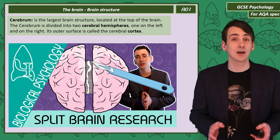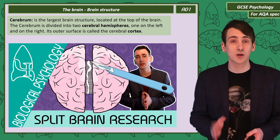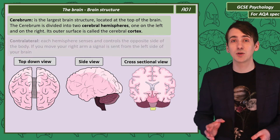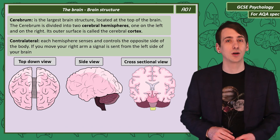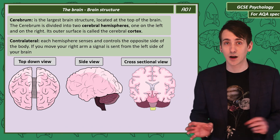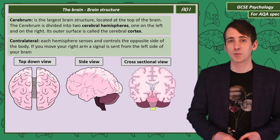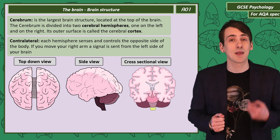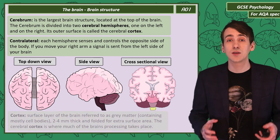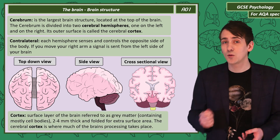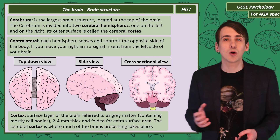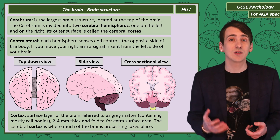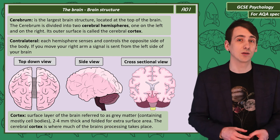The two hemispheres are contralateral, meaning each hemisphere senses and controls the opposite side of the body. If you move your right arm, that was because of a signal sent by the left side of your brain. You can see from the cross-sectional drawing of the brain there is an outside layer to the brain, and we call that the cortex. It's also called grey matter as it's mostly cell bodies doing the processing of the brain.